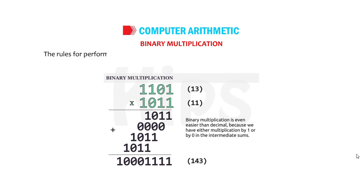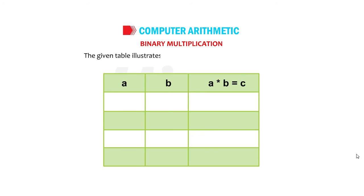Let us now find out how binary numbers are multiplied. The rules for performing multiplication using binary numbers is the same as that of decimal numbers. The given table illustrates the multiplication of two binary digits.